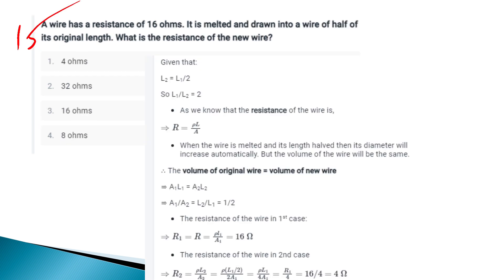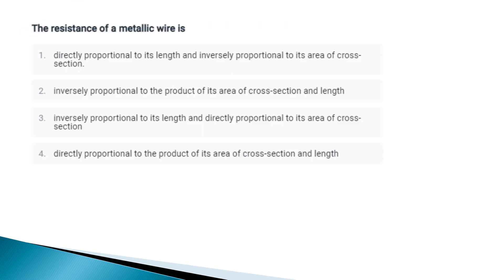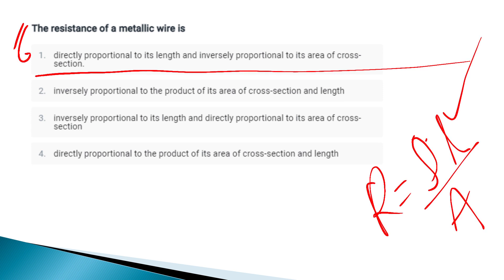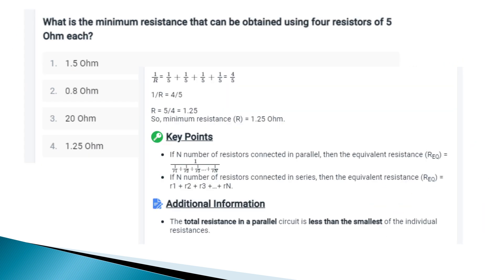A wire of resistance 16 ohm is melted and drawn into a wire of half its original length. What is the resistance of the new wire? With L2 = L1/2, volume is conserved so A2 = 2A1. R2 = ρ·(L1/2)/(2A1) = R/4 = 16/4 = 4 ohm. The resistance of a metallic wire is directly proportional to length and inversely proportional to area: R = ρL/A.